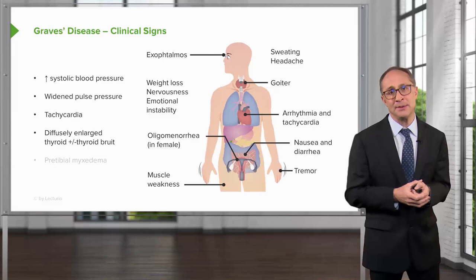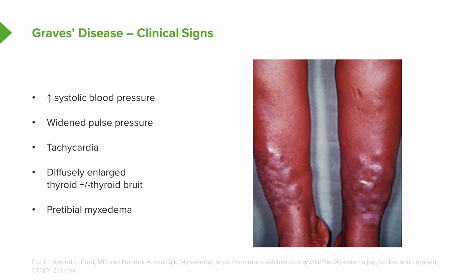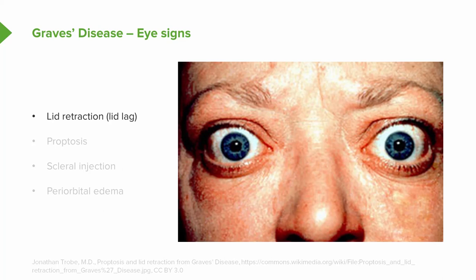Patients may also manifest pretibial myxedema, which we'll describe in subsequent slides. And they have the characteristic eye signs. These eye signs can include lid retraction or lid lag, proptosis — which looks like bulging of the eye in the orbit — scleral injection, where the sclera of the eye appears red, and finally periorbital edema, where the entire orbit seems to be swollen.